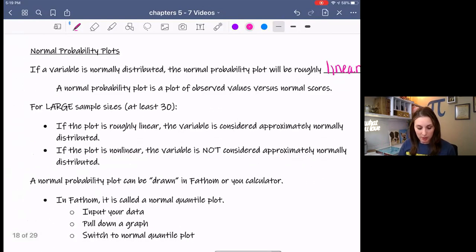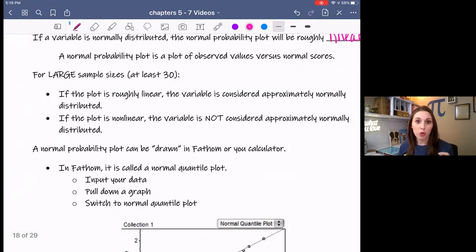A large sample, so a large sample is typically at least 30, so 30 or more observations. If it's large then if the plot is roughly linear then we can say that the variable is approximately normally distributed. If the plot is non-linear, that means it has some curvature to it, a lot of curvature to it, then we would say the variable is not considered approximately normally distributed.